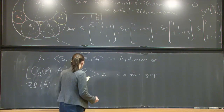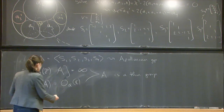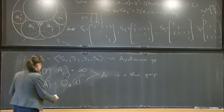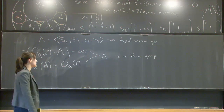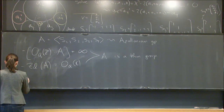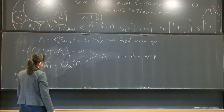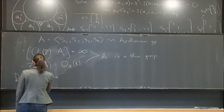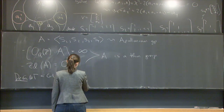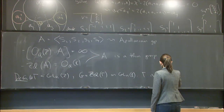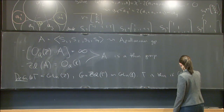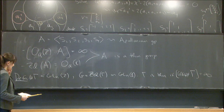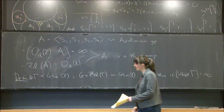Since this is a conference on thin groups, let me write down the definition. For a subgroup Γ of GL_N(C), let G be the Zariski closure of Γ in GL_N(C). We say Γ is thin if the index of Γ in G ∩ GL_N(Z) is infinite. From here you can see the Apollonian group satisfies this definition.